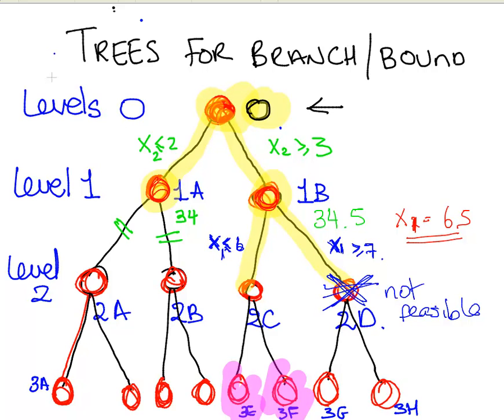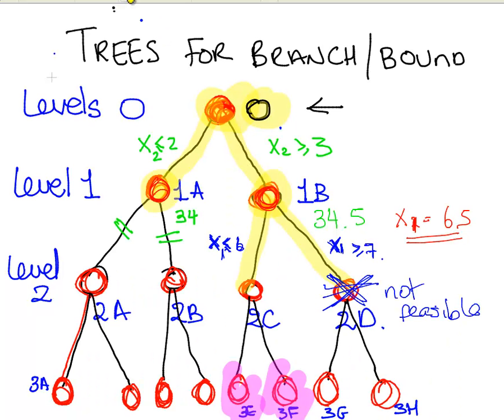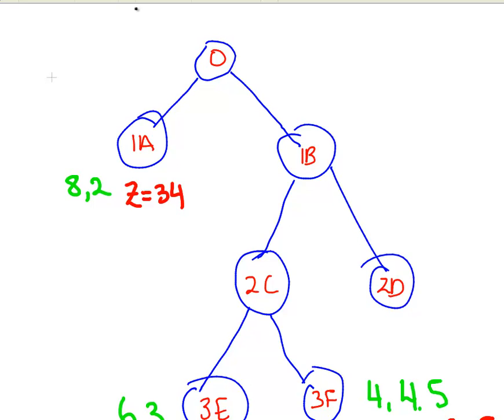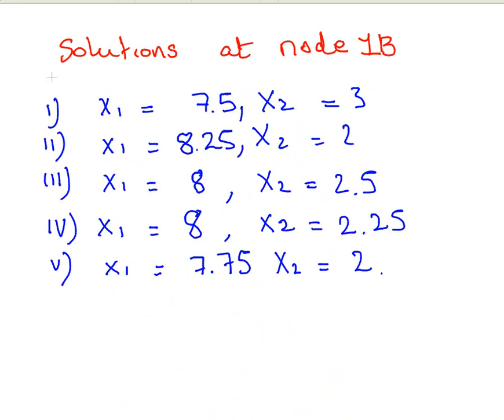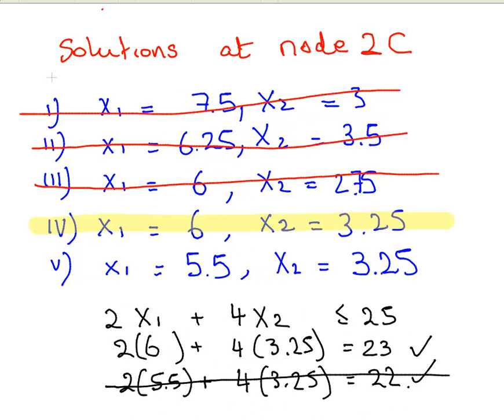Now, what I could do there is get you to specify the additional constraints from solution 2C. Those would have been 6 and 3.25. So what we would do here is, that would have been the solution at node 2C.